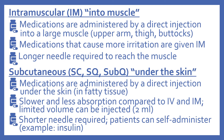Next is intramuscular or IM, which means into the muscle. These medications are administered by direct injection into a large muscle — generally the deltoid muscle of the upper arm, the thigh, or the buttocks. This route is used for medications that cause more irritation, as they are past the skin, and generally requires a longer needle to reach the muscle.